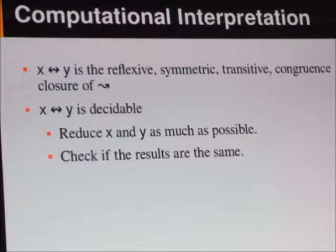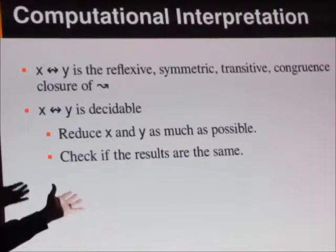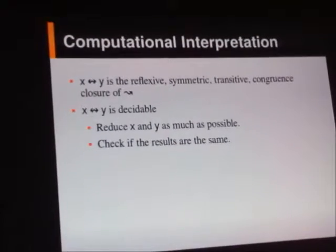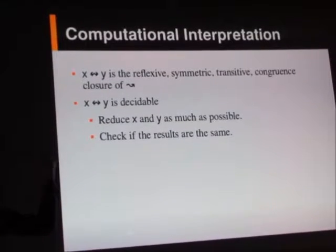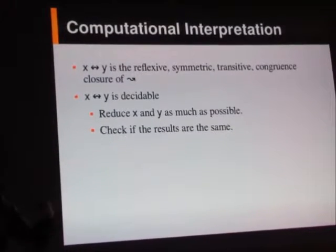which means that you can apply that rule on any sub-expression in any direction and build a giant relationship out of that. But remember, reduction was type-preserving, right? So everything that's related to each other will have the same type.